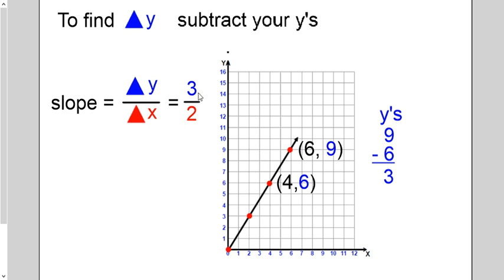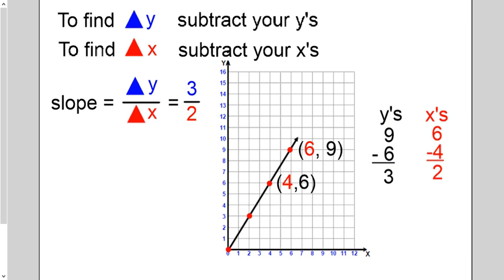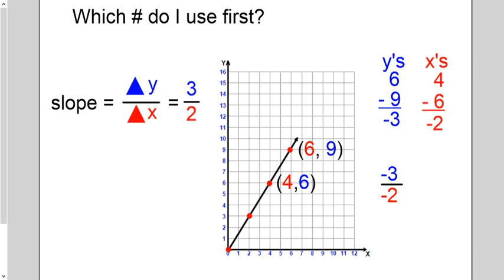See how 9 minus 6 is 3? It's our change in y's, so that's our top number. How about our change in x's? 6 minus 4 is 2. And that's our change in x, so that goes on the bottom. Which number do I use first? Everybody asks us, do you see where I flipped it around backwards? Now I'm saying 6 minus 9. 6 minus 9 is negative 3. And 4 minus 6 is negative 2. Our change in y's are written in blue, so this would be negative 3 on top and negative 2 is on the bottom. And guess what?